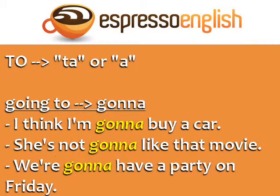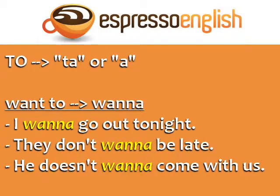Let's begin. The word 'to' becomes 'ta' or 'a': 'I think I'm gonna buy a car,' 'She's not gonna like that movie,' 'We're gonna have a party on Friday.' 'Want to' becomes 'wanna': 'I want to go out tonight,' 'They don't want to be late,' 'He doesn't want to come with us.'